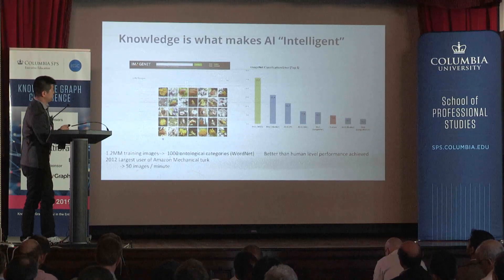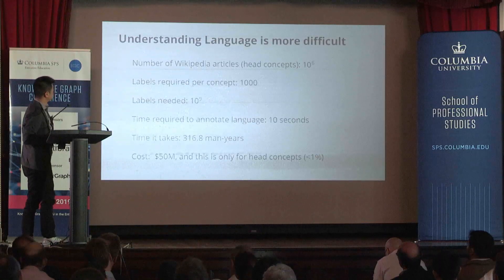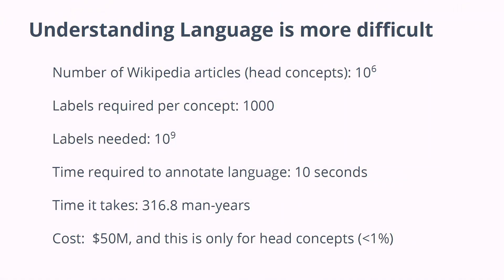The problem with trying to engineer a system for language using this approach is you run into some challenges. How many concepts are there — equivalent to these image classes? Wikipedia has approximately single-order millions to 10 million articles in it, and with state-of-the-art relation extraction, as an earlier speaker mentioned, you need a lot of examples for each relation — about 1,000 labeled examples for each of those concepts.